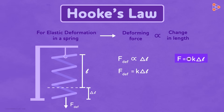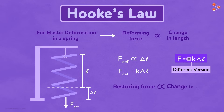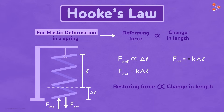The negative sign comes due to a slightly different version of Hooke's Law. We can also define Hooke's Law as: the restoring force is directly proportional to the change in length, and this is valid for elastic deformation only. The negative sign tells us that the restoring force is opposite to the direction in which the length is changing.